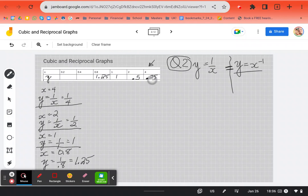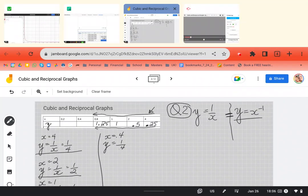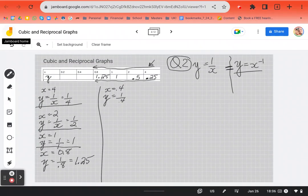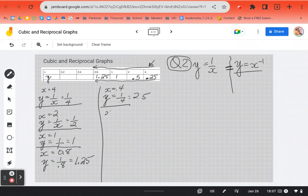You can start to see a pattern happening here. As our x is getting smaller, our y is getting bigger. So what happens if x is equal to 0.4? Y is equal to one over 0.4. Again, jump to your calculator. One divided by 0.4 is 2.5. You could do this manually too if you feel confident, but if you don't feel confident, don't worry about it.